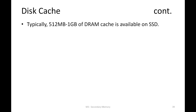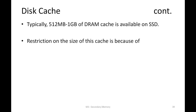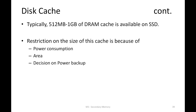Even though our regular systems have 16 GB or 32 GB of DRAM, we have limited ourselves to less than 1 GB of DRAM cache in the SSD, primarily because power consumption is high and there is an area limitation — the SSD must conform to a specific form factor. Also, the larger the disk cache, the more contents it holds, demanding more time for battery backup. These design decisions determine the overall disk cache size.